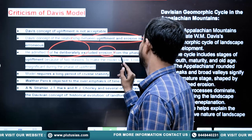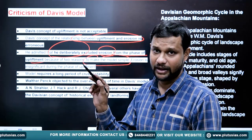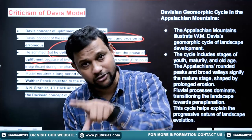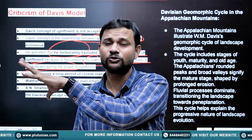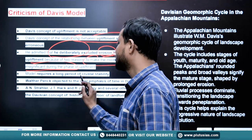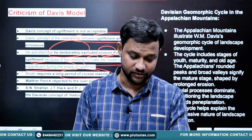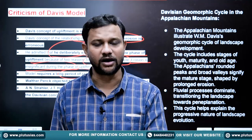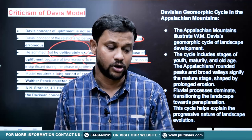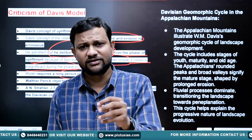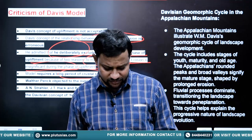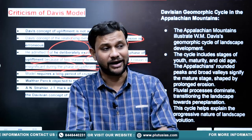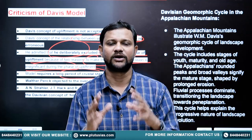Davis himself admitted that he deliberately excluded erosion from the phases of upliftment to make the model simpler, assuming erosion is insignificant during upliftment. But he should have considered the impact of erosion from the start for more accurate results. Another criticism is that the model demands long crustal stability — through the youth, mature, and old phases, no volcanic, earthquake, or tectonic events are expected. It is almost impossible for landmasses to remain stable for hundreds of thousands of years.